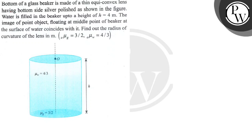Hello, let's read the question. The question says bottom of a glass beaker is made up of a thin equi-convex lens having bottom side silver polished as shown in the figure. Water is filled in the beaker up to a height h equal to 4 meters. The image of point object floating at middle point of beaker at the surface of water coincides with it. So we have to find the radius of curvature of the lens in meters.